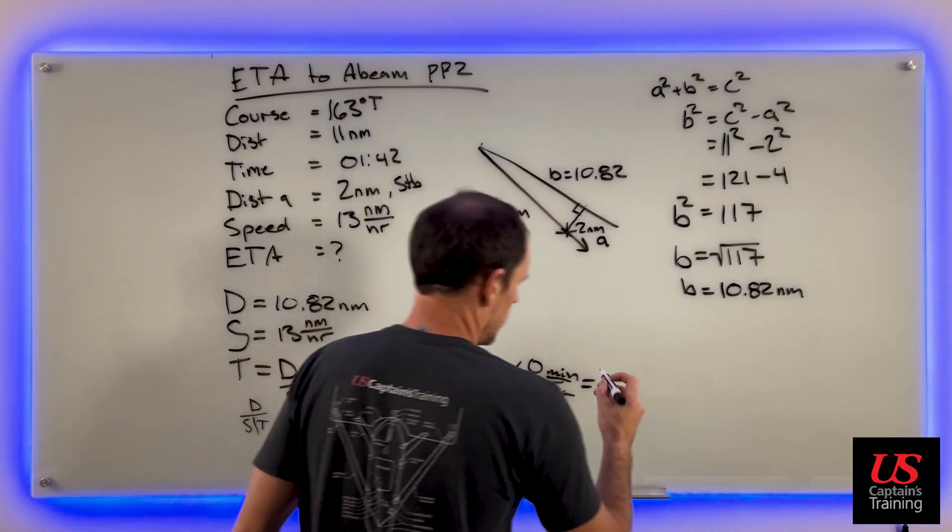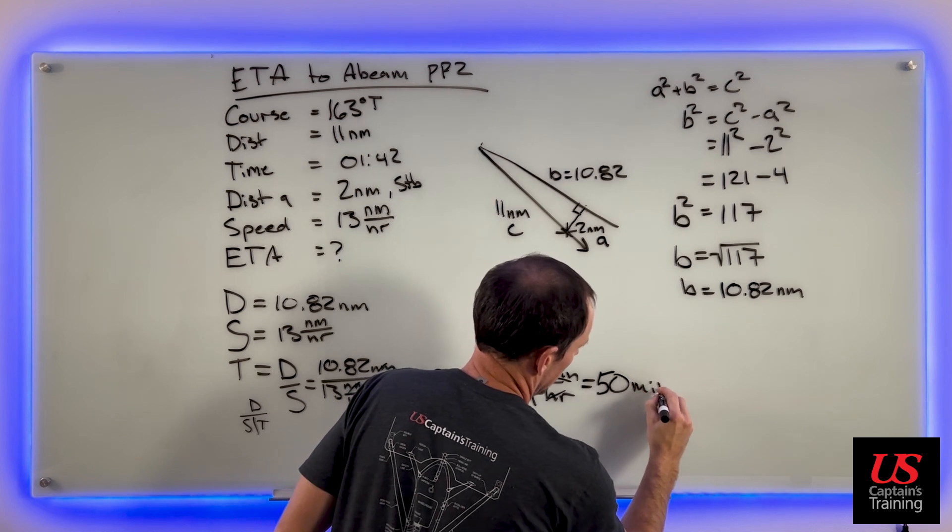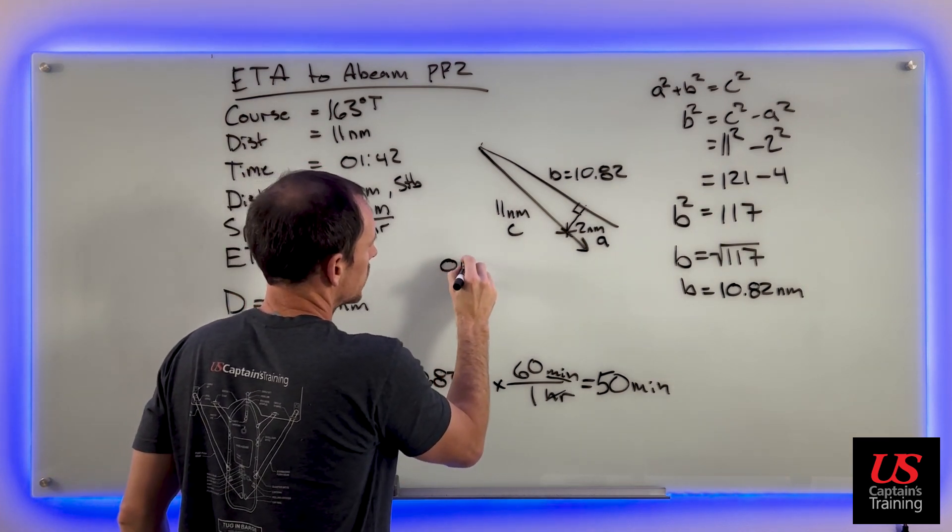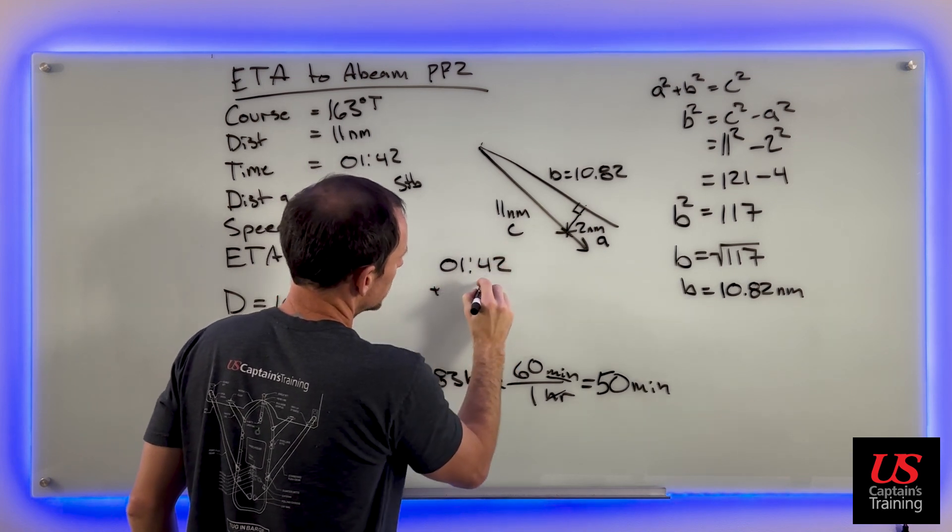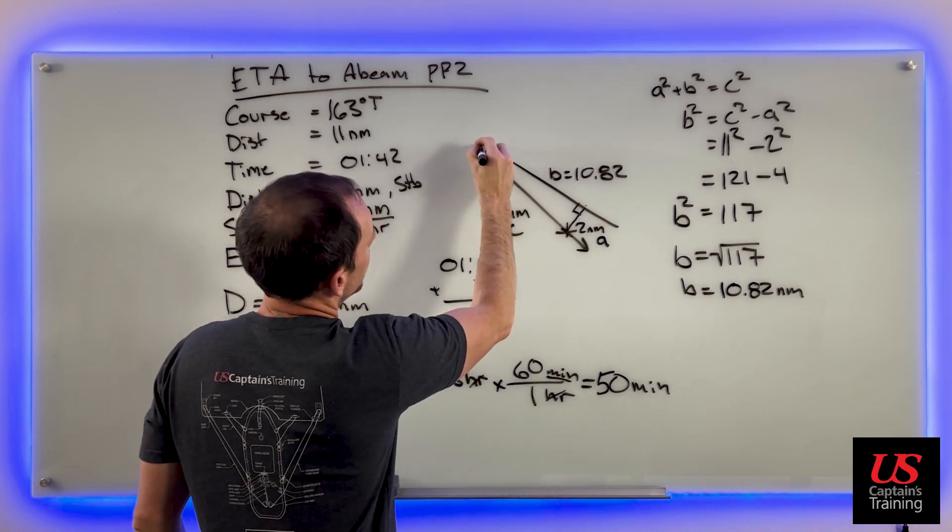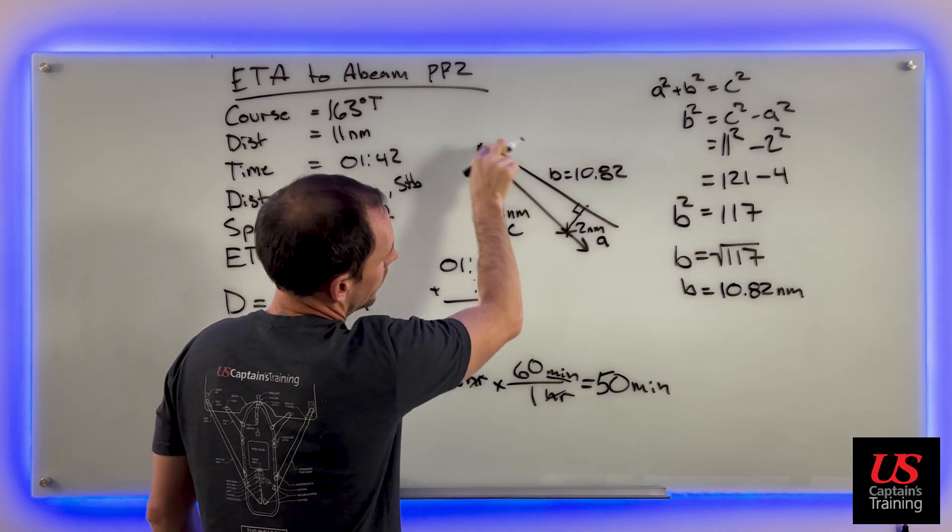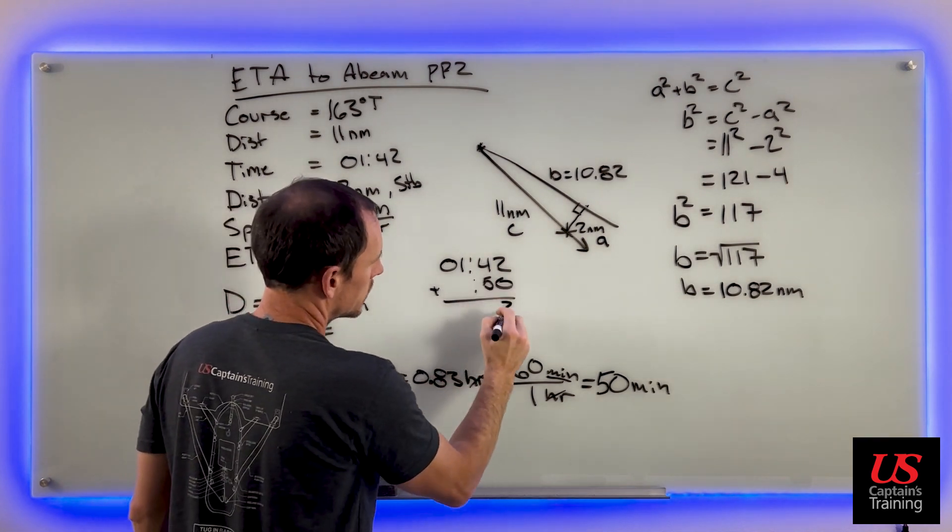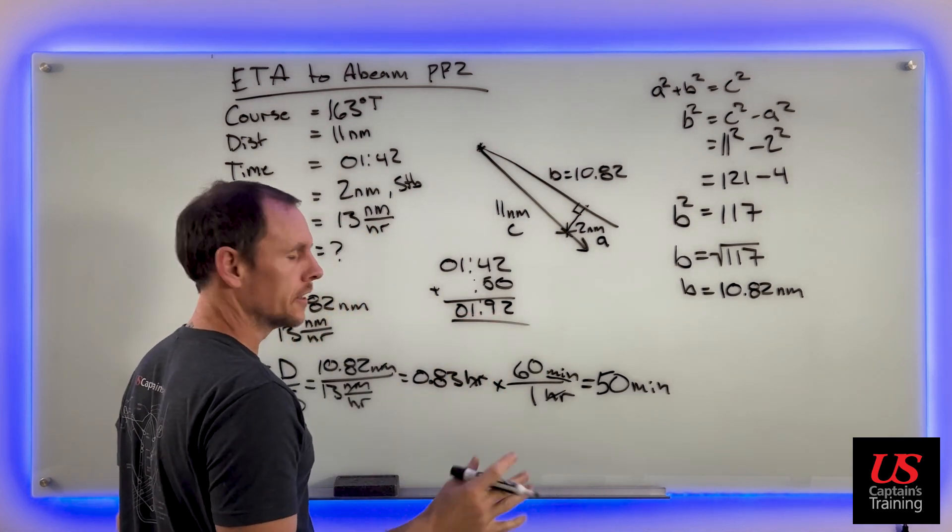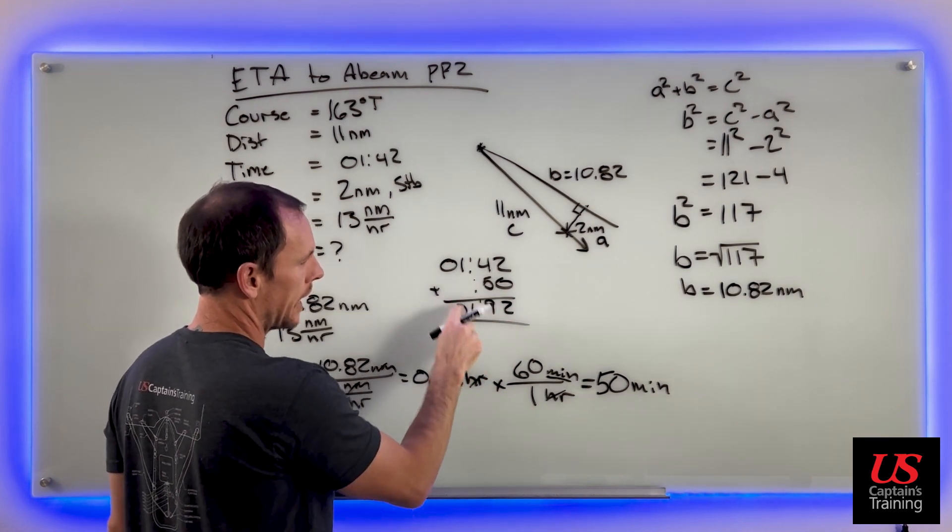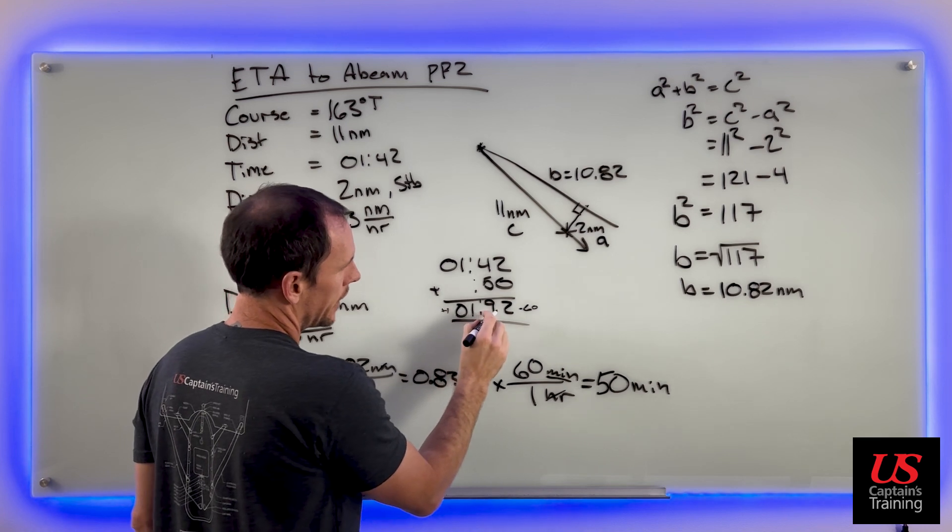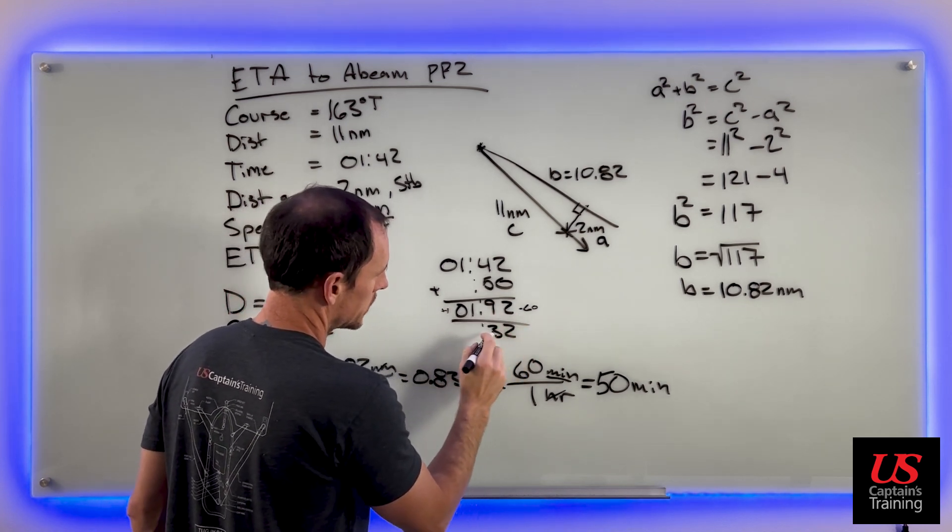We round up - anything 0.5 or higher we round up - so that's 50 minutes. Now we can add 50 minutes to 0142 to get our ETA. 0142 plus 50 minutes - that's how long it's going to take us to go from here to abeam. 0192 doesn't look like a time. You take 60 minutes out and add another hour. Take 60 out here, add one here, and 92 minus 60 is 32 minutes. 0232 is the ETA.